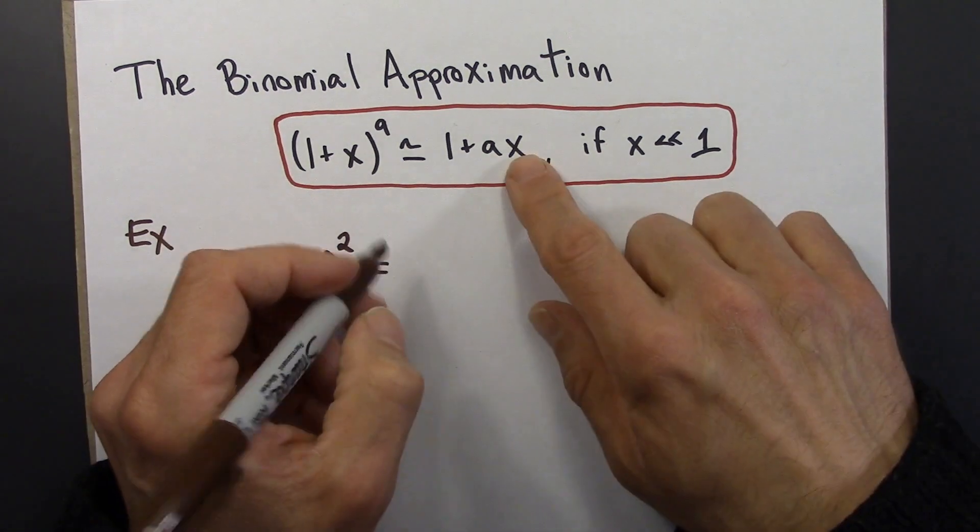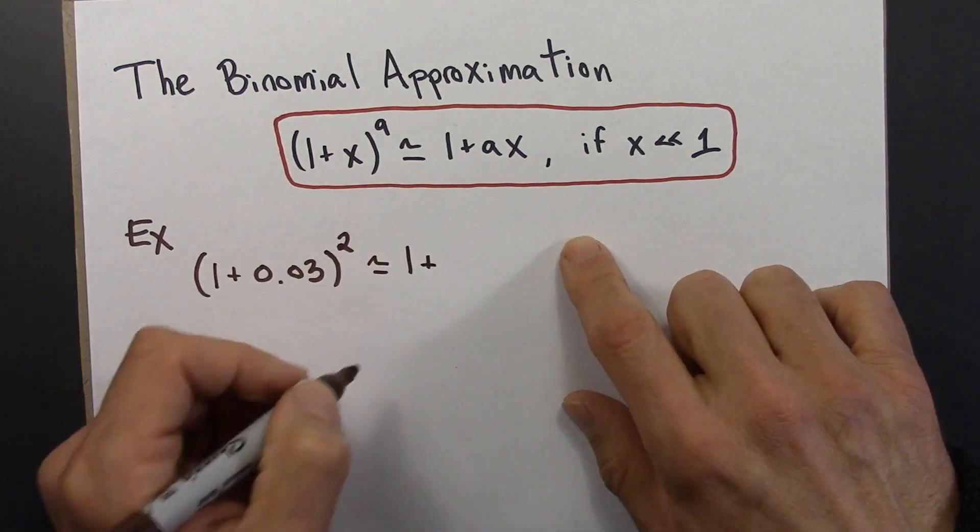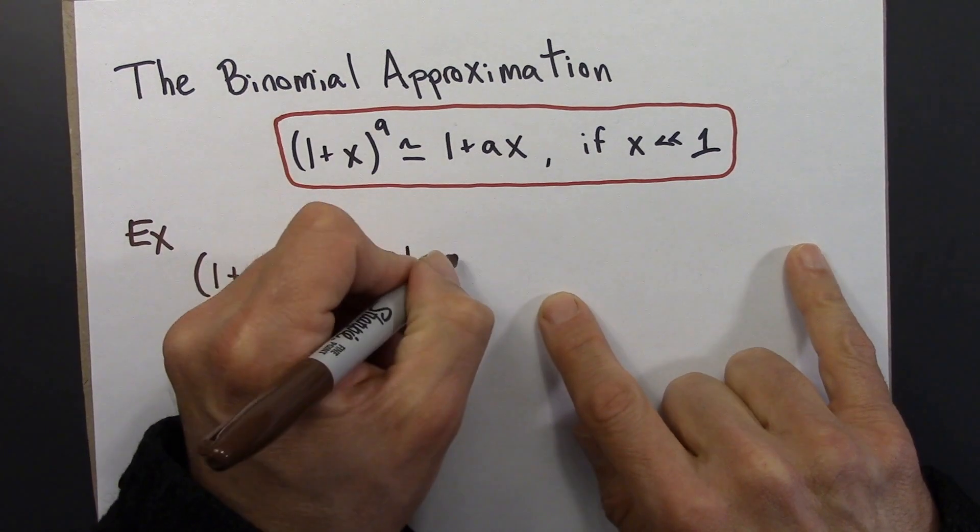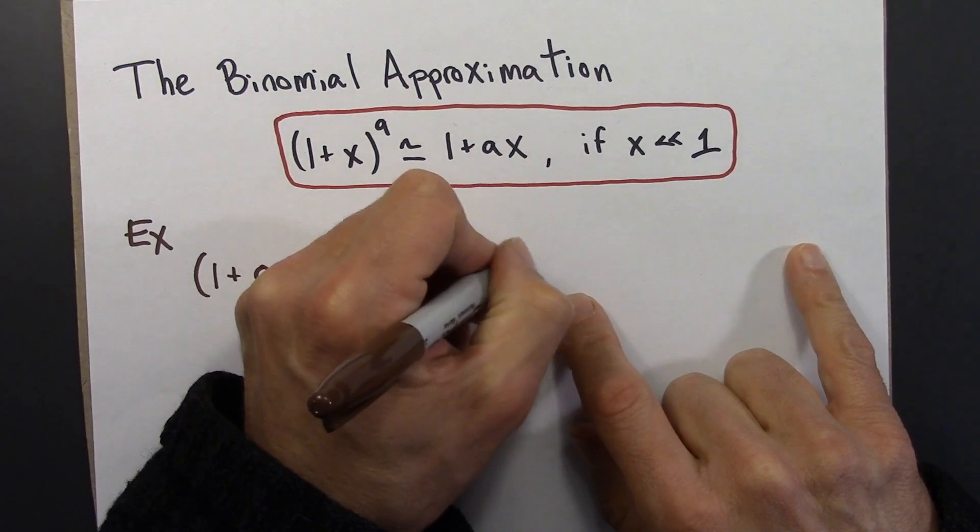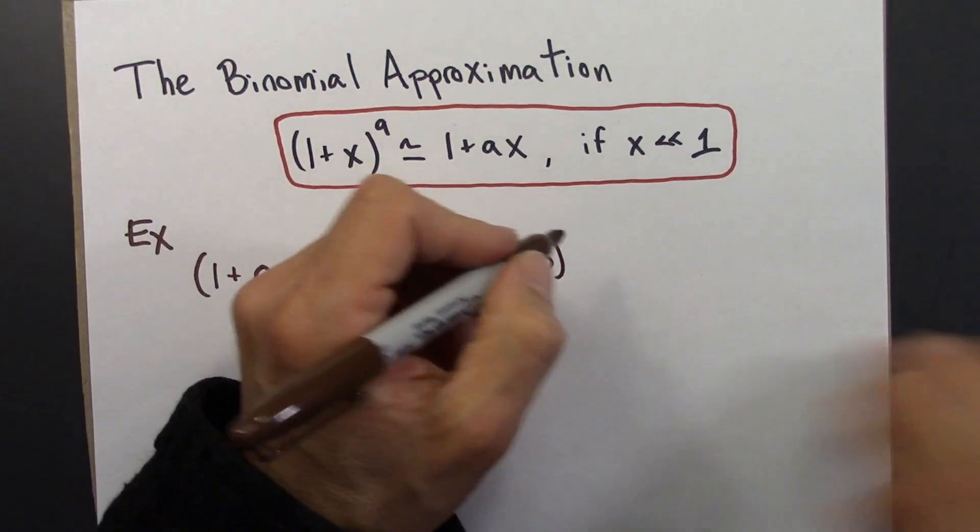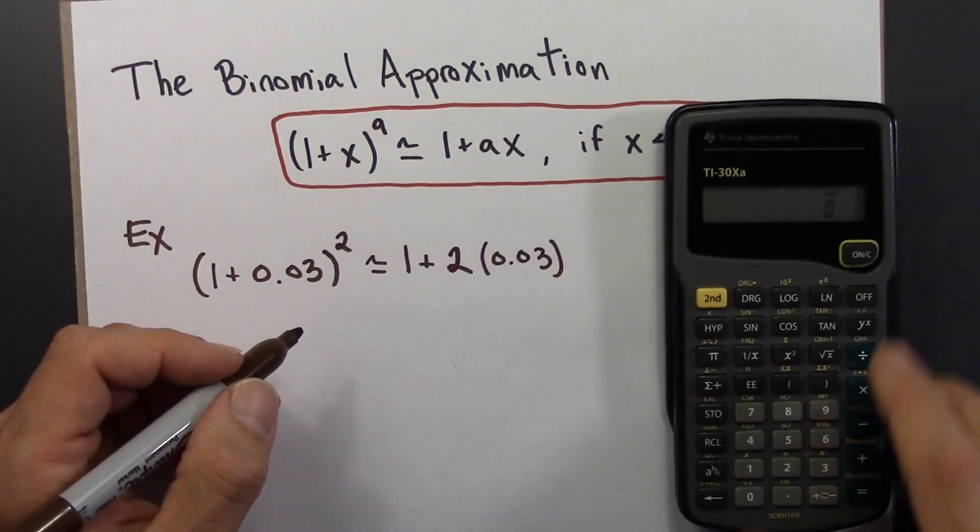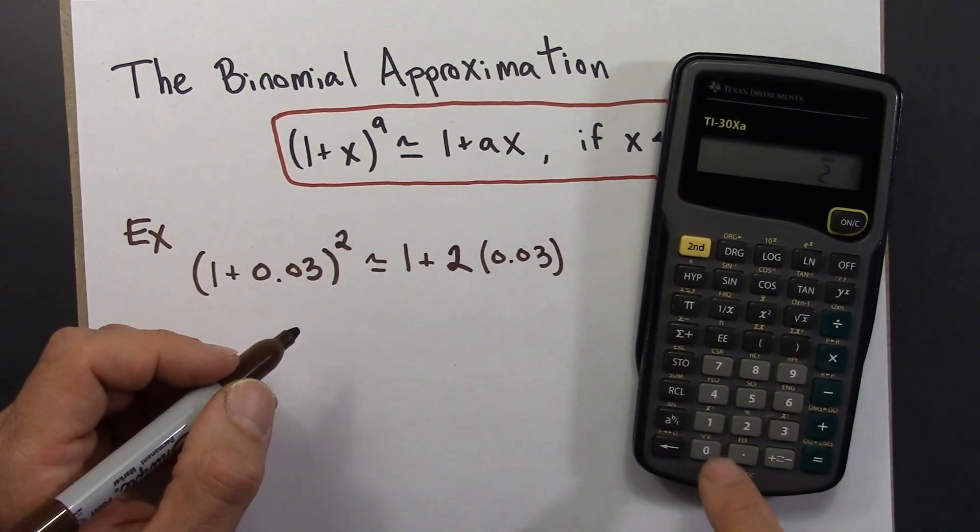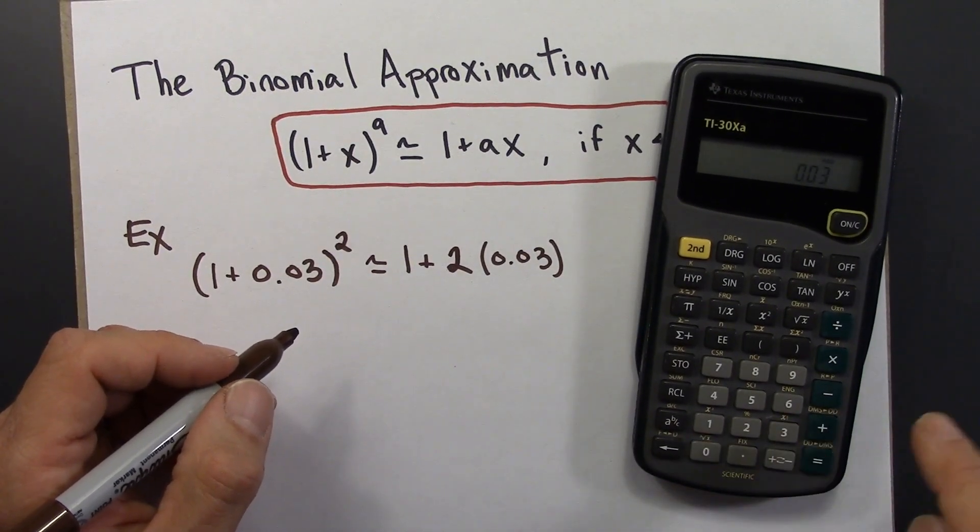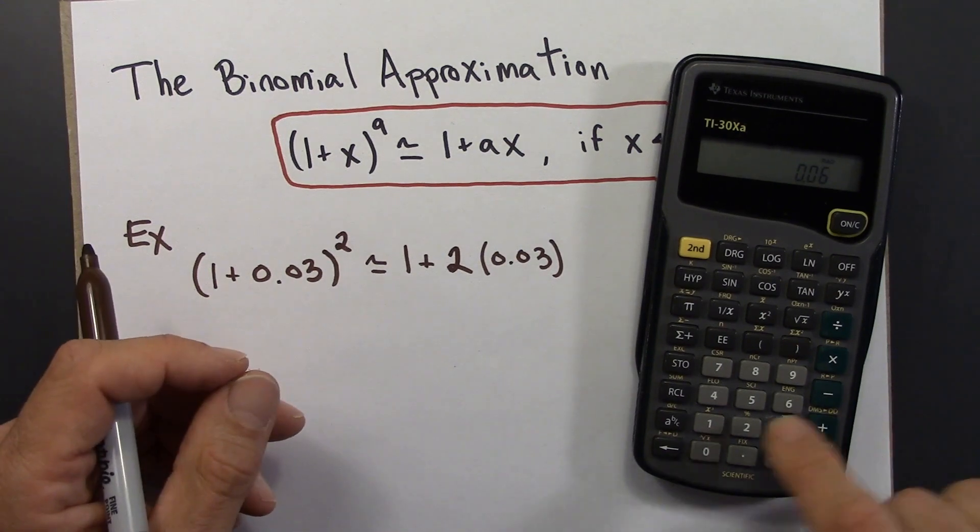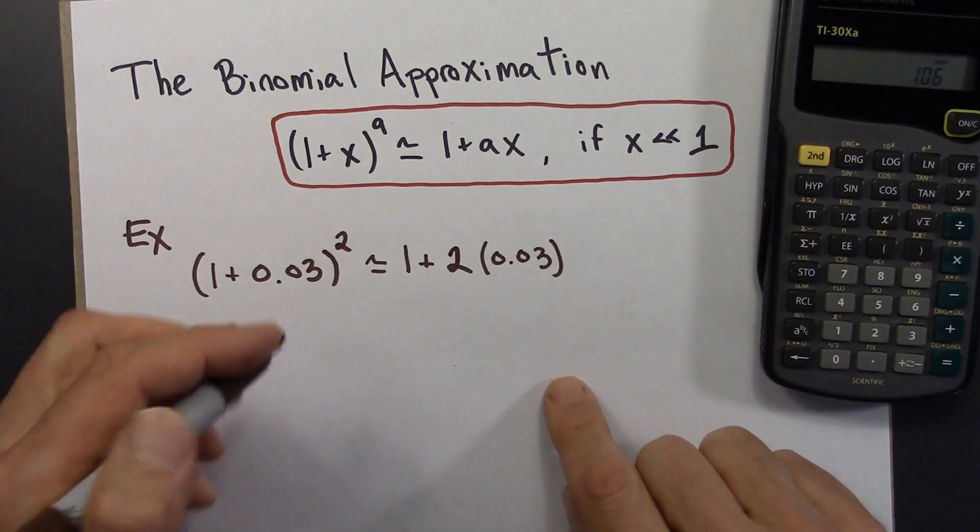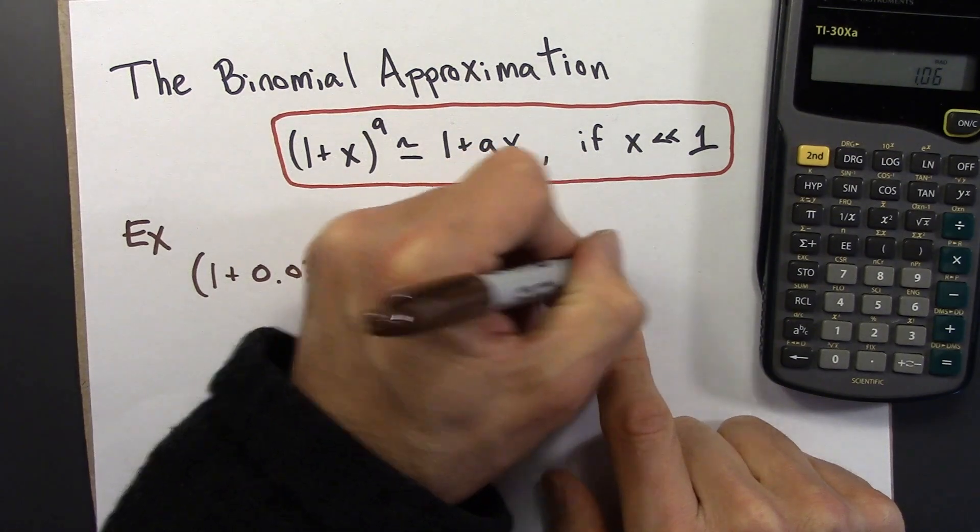So this is going to look like 1 plus a is 2, and x is 0.03. So let's do that. 2 times 0.03, that's 0.06. Probably could have done all of this without a calculator. So this is 1.06.